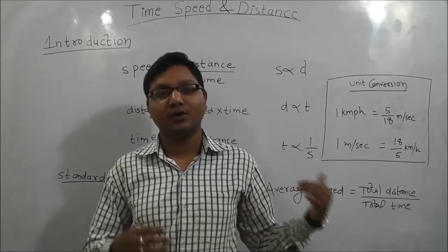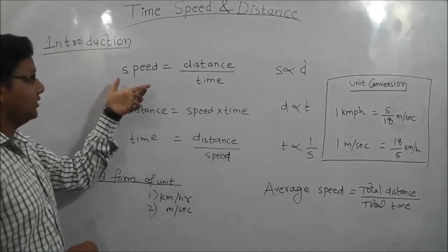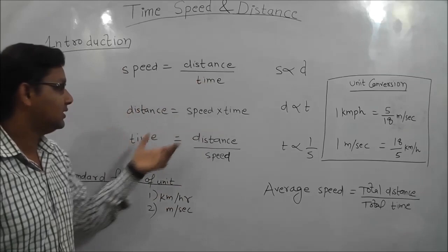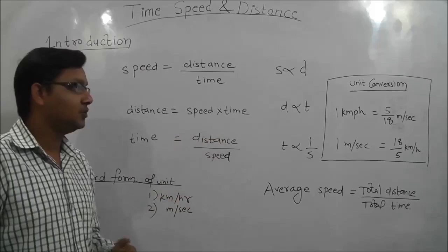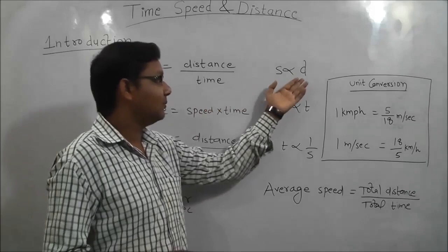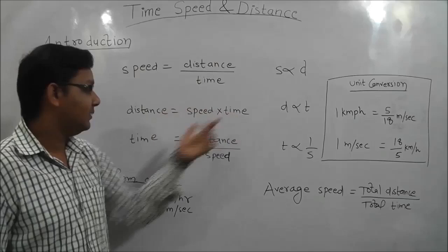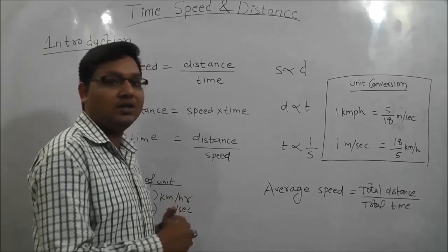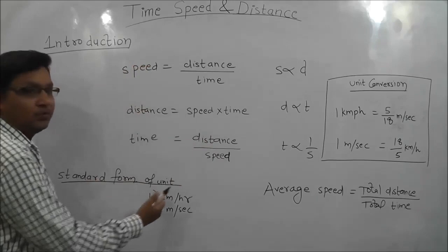Let's begin. The formula of speed is distance upon time. The formula of distance is speed into time. The formula of time is distance upon speed. Speed is directly proportional to distance, distance is directly proportional to time, and time is inversely proportional to speed. This is used in many questions.